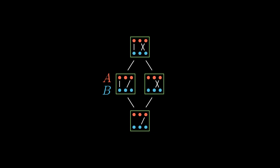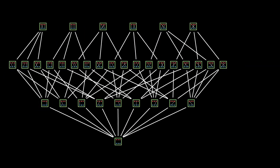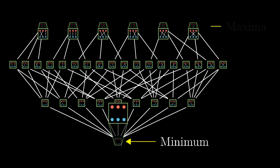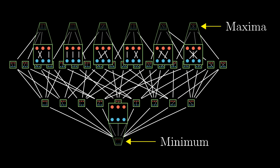One matching is above another if it contains all the edges of the other matching and possibly some more. This way we can consider the entire partially ordered set of all partial matchings. This ordered set has one minimal element — the empty matching — and multiple maximal elements: the matchings to which we cannot add any further edge. So the maximal elements correspond to matchings that fully cover one of the sets.